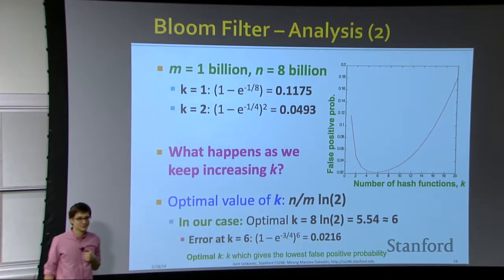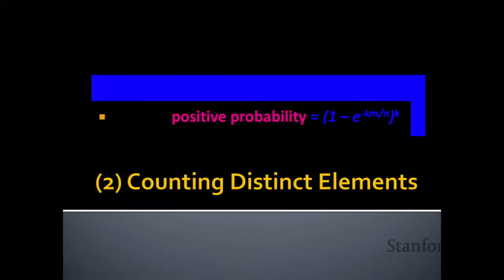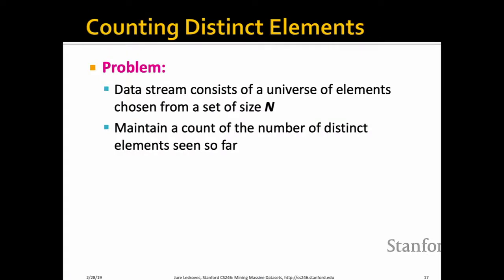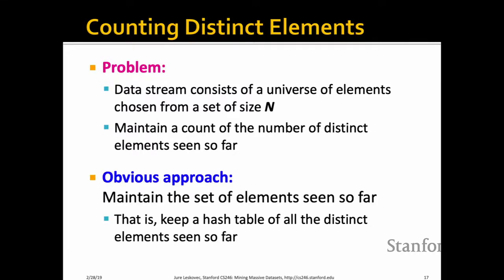Now the second algorithm: counting distinct elements in a stream. The problem is you have a stream of items drawn from a universe of size N, and you want to maintain a count of the number of distinct items seen so far. Obviously you could use a dictionary, but if you can't store all elements in memory, how do you still count how many distinct elements you've seen?